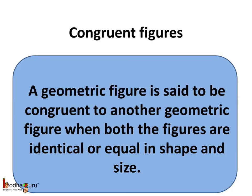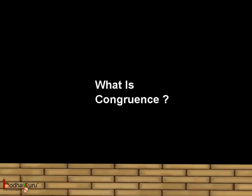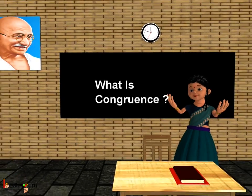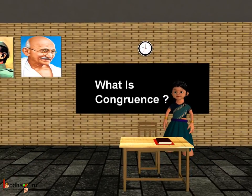So to sum up what we learned today: a geometric figure is said to be congruent to another geometric figure when both figures are identical or equal in shape and size. That was all about congruent figures. Bye-bye children!